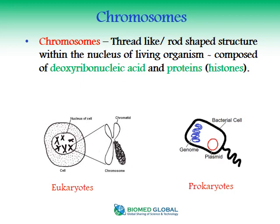Starting with the definition of chromosomes, chromosomes are defined as either a thread-like or rod-shaped structure — both are correct. This structure here is thread-like, showing how DNA is packaged. Normally there are two rods of the chromosome. They are thread-like structures within the nucleus of living organisms, composed of deoxyribonucleic acid and protein, which is histone in nature.